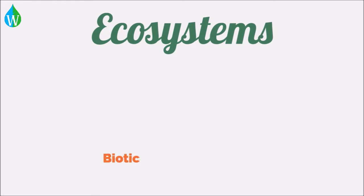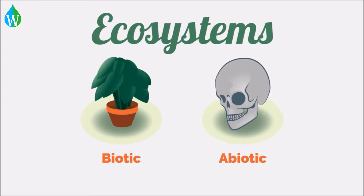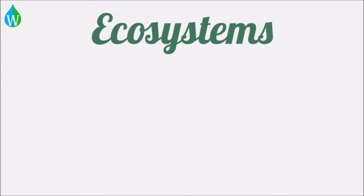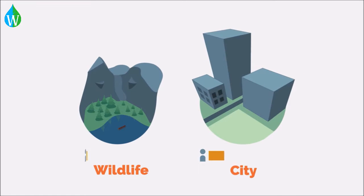An ecosystem encompasses all of the biotic, or living, and abiotic, or non-living pieces of an environment. All ecosystems are considered to be either wild or managed based on the amount of human influence in an ecosystem.